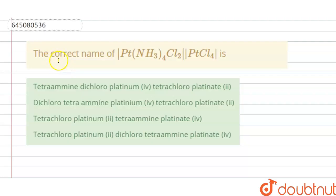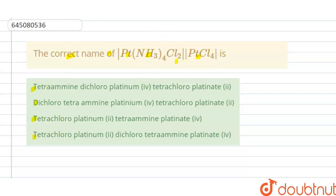Hello students. Today our question is: find the correct IUPAC name of [Pt(NH3)4Cl2][PtCl4]. Options A, B, C, D are given. So we have to choose the correct option.